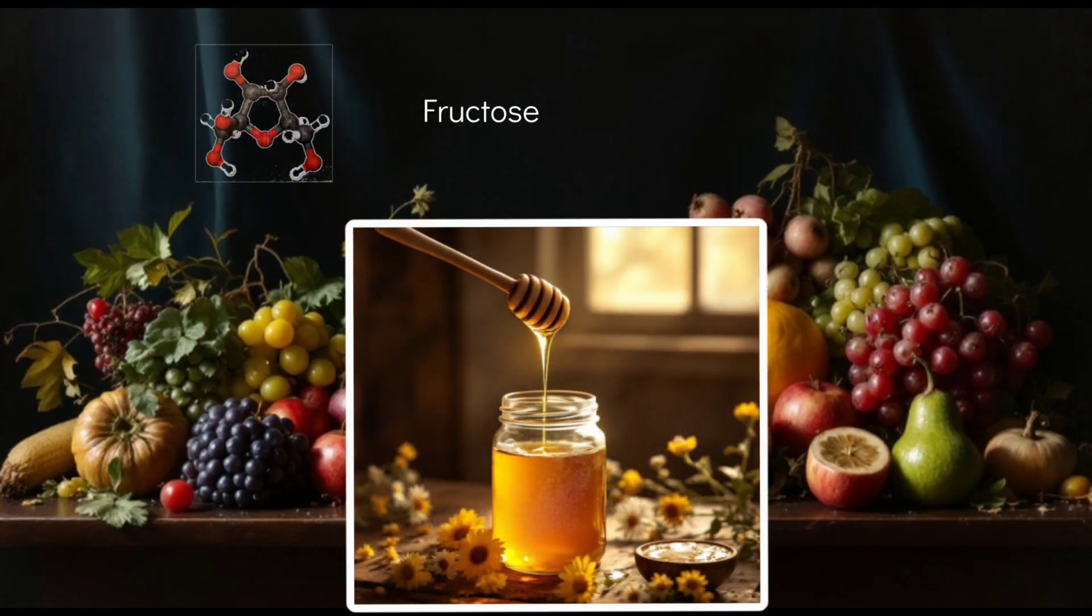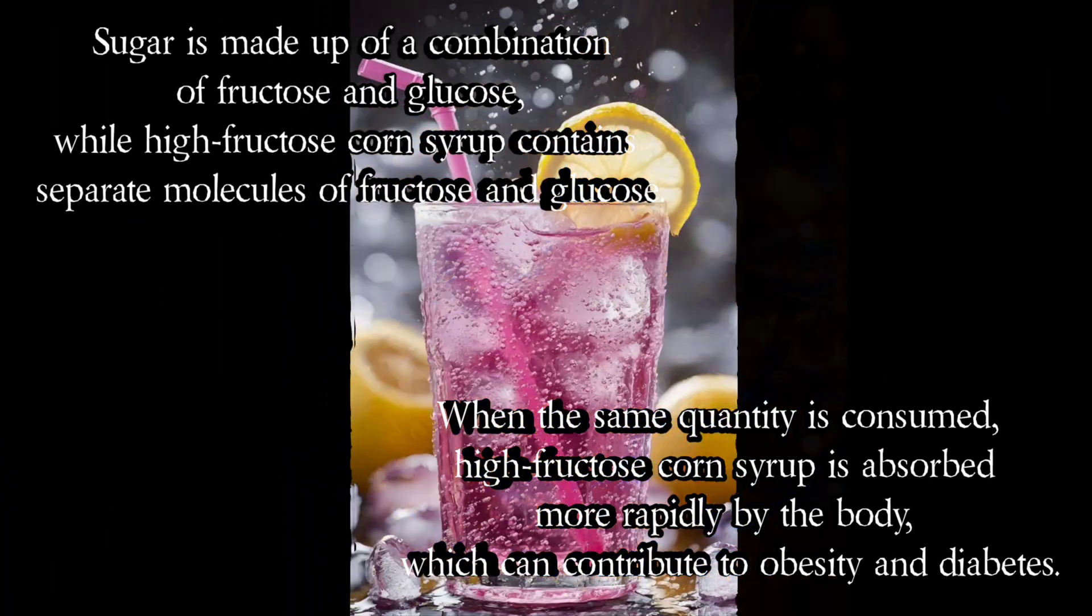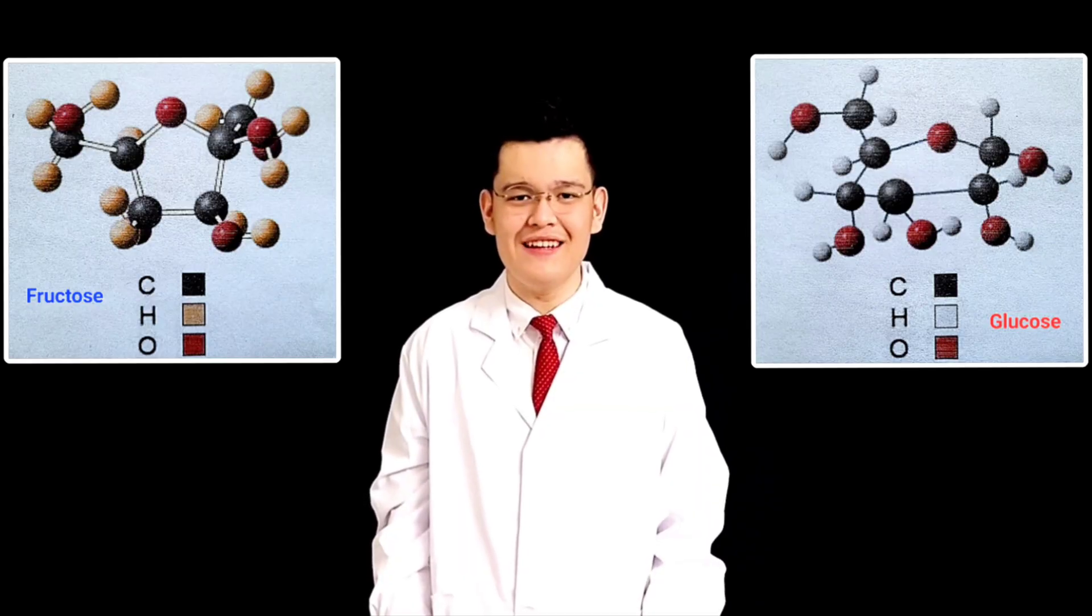While fructose is naturally present in fruits and honey, it is most often consumed as artificially produced liquid fructose. This type of fructose is a mixture of fructose and glucose, with cornstarch being its main ingredient.